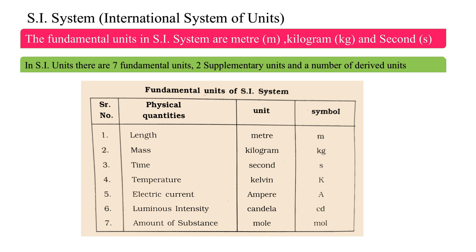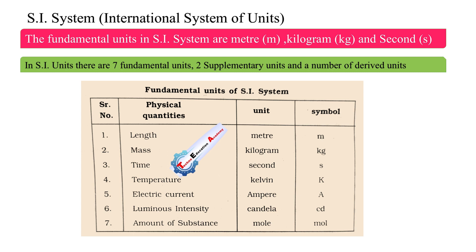Length — its unit is meter and its symbol is m. We use this physical quantity to geometrically measure dimension. Mass — its unit is kilogram. We use this fundamental quantity to measure the weight of any substance.